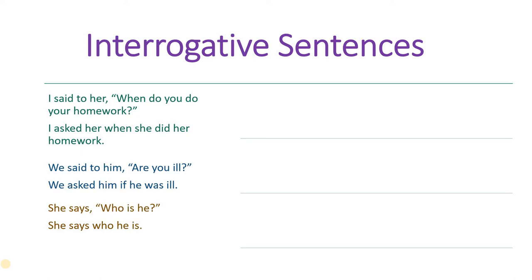We remove the comma and inverted commas, and the reporting verb is changed most of the time to 'asked.' There is also a change in the position of the verb in the second part of the statement. First one: 'when do you do your homework?' becomes 'when she did her homework.' Second one: 'are you ill?' becomes 'if he was ill.' Third one is the classic example where we have not used 'ask' but the position of the verb shifts — she says who he is — but it's a statement, therefore full stop.